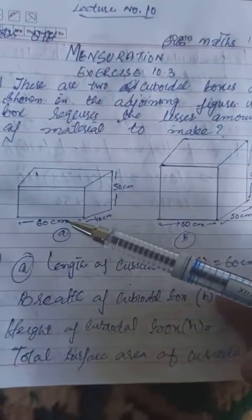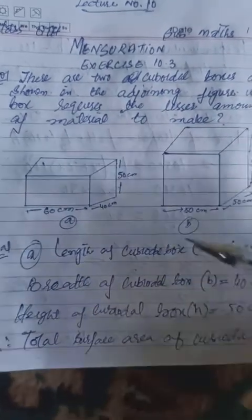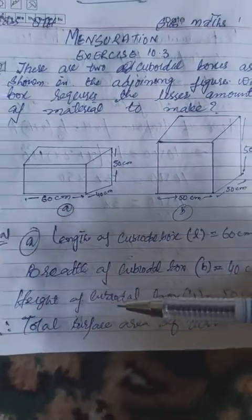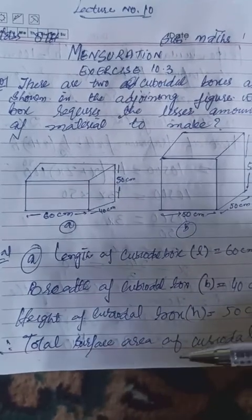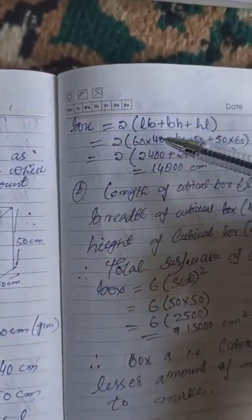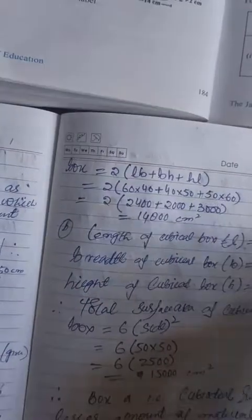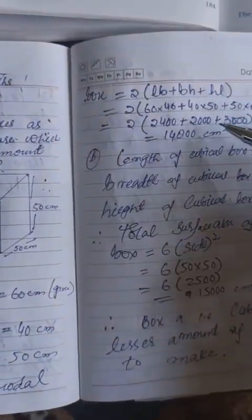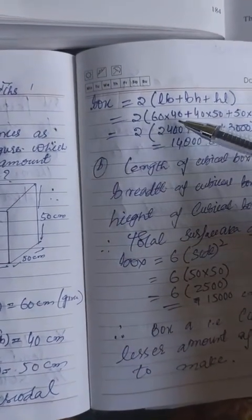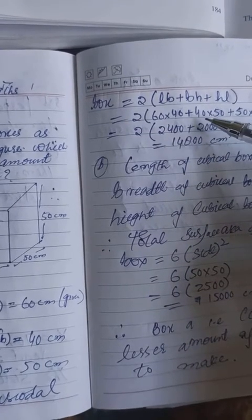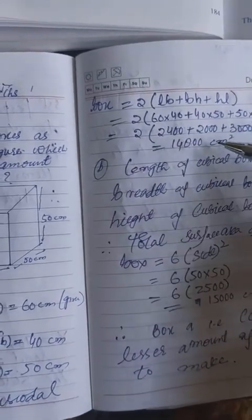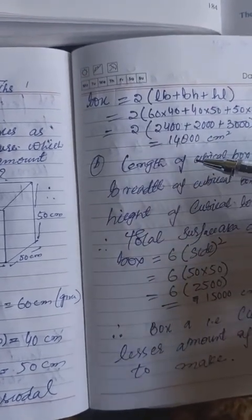Let's find the total surface area of the cuboidal box. Length L equals 60 cm, breadth B equals 40 cm, height H equals 50 cm. Total surface area equals 2 times (length times breadth plus breadth times height plus height times length). So 2 times (60 into 40 plus 40 into 50 plus 50 into 60). This equals 2 times (2400 plus 2000 plus 3000). That is 2 times 7400, which equals 14,800 centimeters square.